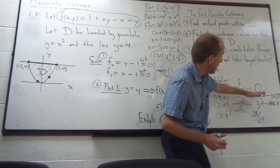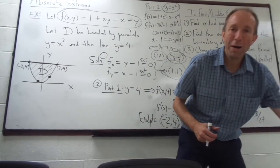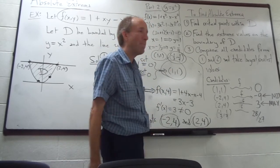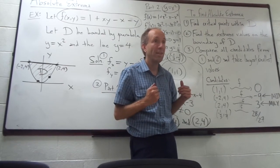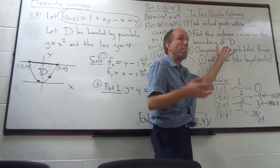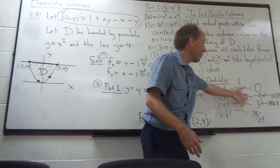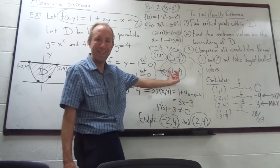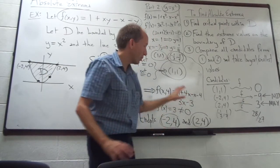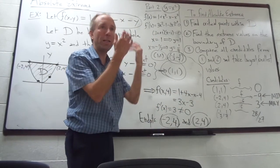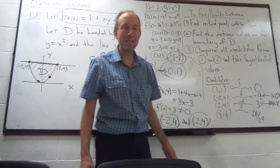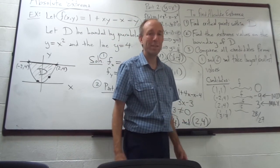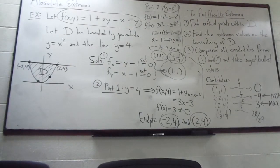The nice thing about this method is you never have to use the D-test. You just find the candidates — critical points from step one together with critical points on the boundary from step two — throw them all into a list, plug them into the function, and take the largest and smallest values. That gives you the absolute maximums and minimums. Thanks, I hope that made sense!